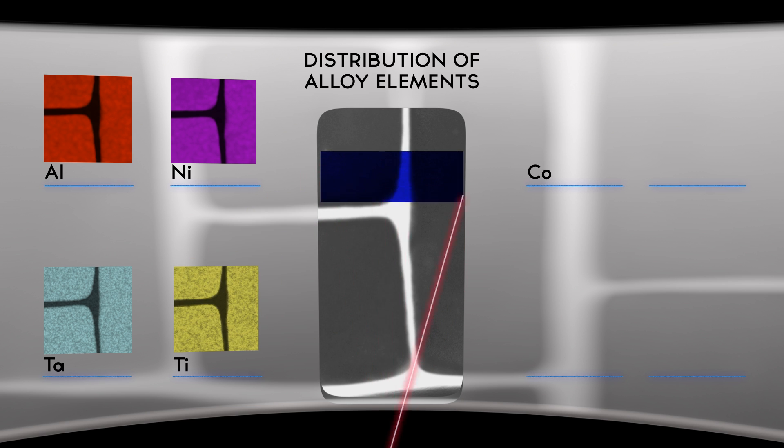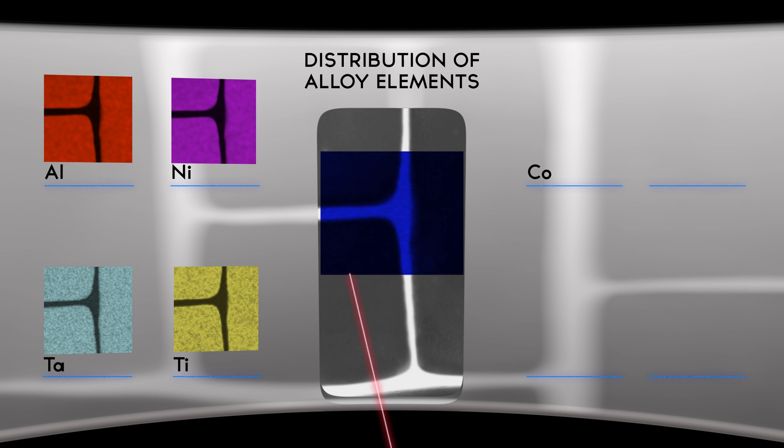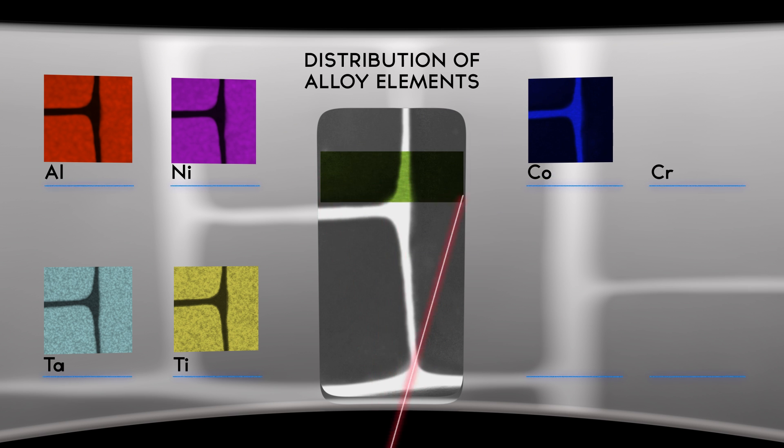Instead, there are elements like aluminium, nickel, tantalum and titanium which prefer to be located in the gamma prime phase.